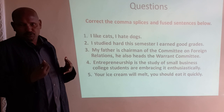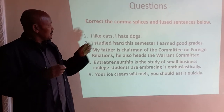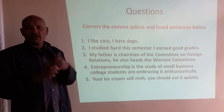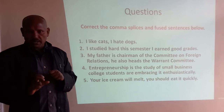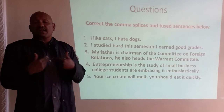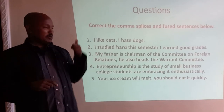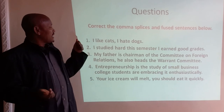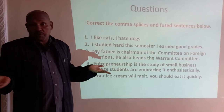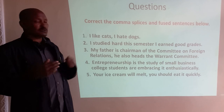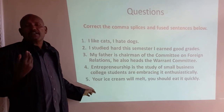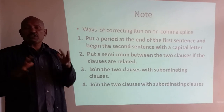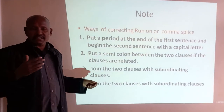Let's look at the first practice question: 'I like cats, I hate dogs.' There are two independent clauses here — 'I like cats' and 'I hate dogs' — separated by only a comma, so this is comma splice. One correction: 'I like cats. I hate dogs.' Another correction: 'I like cats, but I hate dogs.' Try the remaining questions by yourself, then check your answers on the next page and compare them with the correct sentences provided.